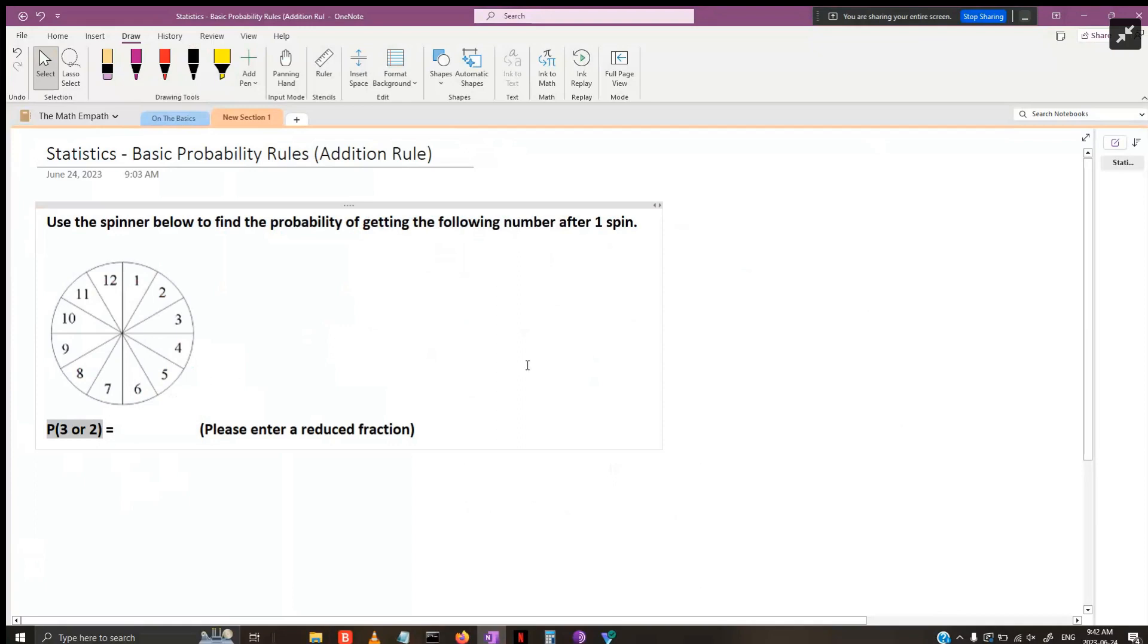It says we're going to find the probability of getting the following number or numbers after a single spin. Keep in mind we're only spinning this one time, and the events involved will be in a single spin, a single situation.